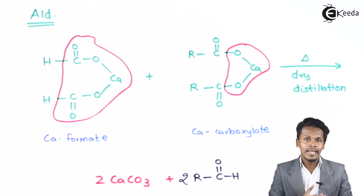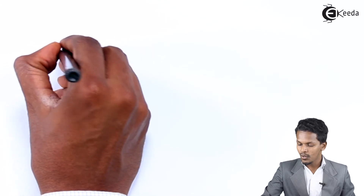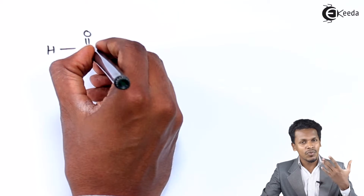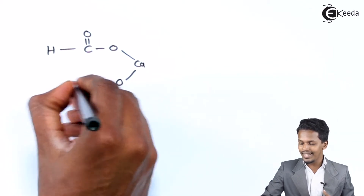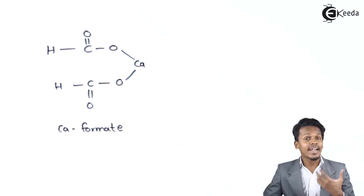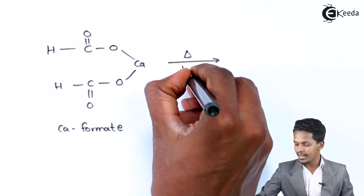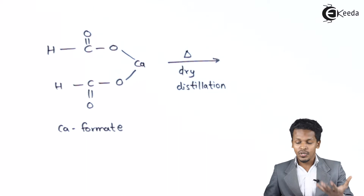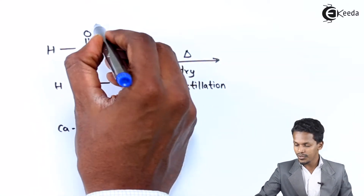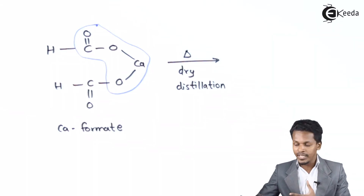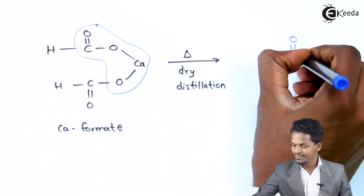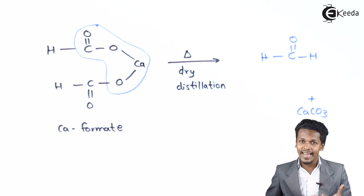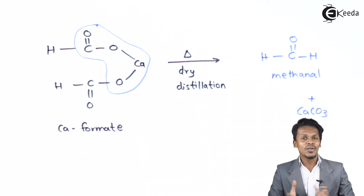If only calcium formate undergoes the dry distillation process, even that will form an aldehyde. Suppose if we have considered only calcium formate and it undergoes dry distillation, obviously CaCO₃ will be removed. The product that we have is H–C(=O)–H, which is nothing but an aldehyde — specifically it could be called formaldehyde or methanal.